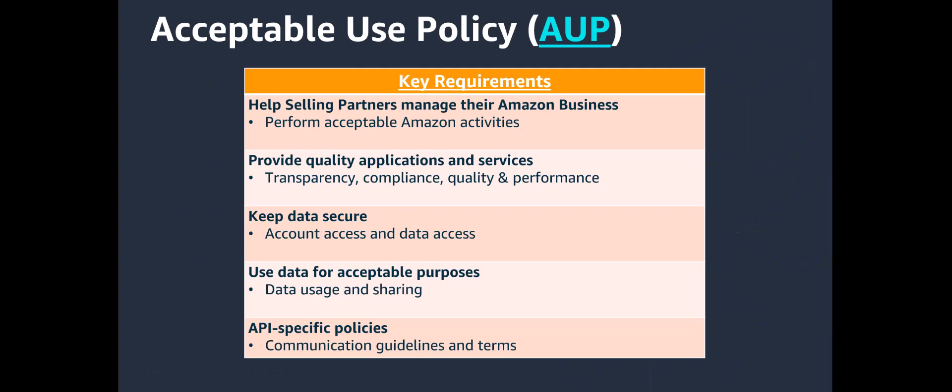You may ask, why does this apply to me? These requirements are driven through policies which you agree to when starting the process of developing a service for the Amazon Selling Partner App Store. The Acceptable Use Policy governs the appropriate use of Amazon Selling Partner APIs, which essentially means don't misrepresent your usage of data and only perform activities that Selling Partners have authorized you to do.